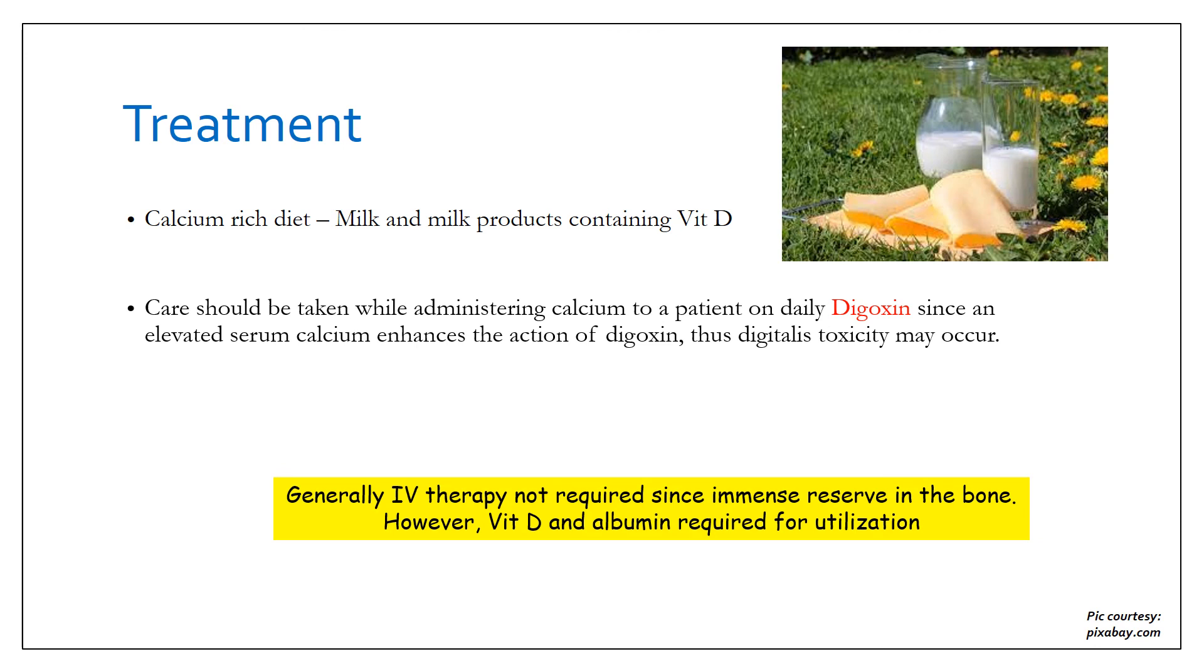Because bone is a major storage organ system for calcium and a large reserve of calcium is present in the bone. But vitamin D and albumin are must for the utilization of calcium, so even if calcium is present in the body, the utilization requires vitamin D and albumin. Symptomatic hypocalcemia can precipitate if the deficiency of these two is there.